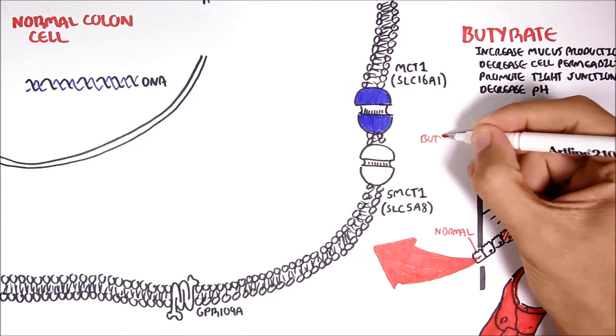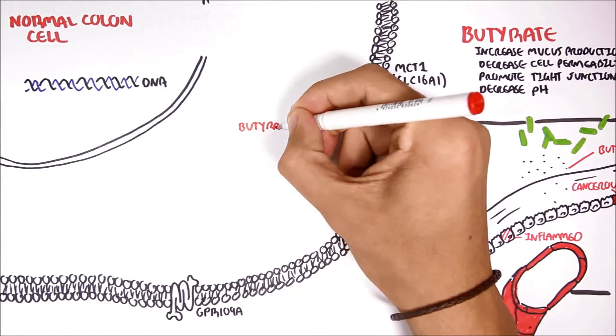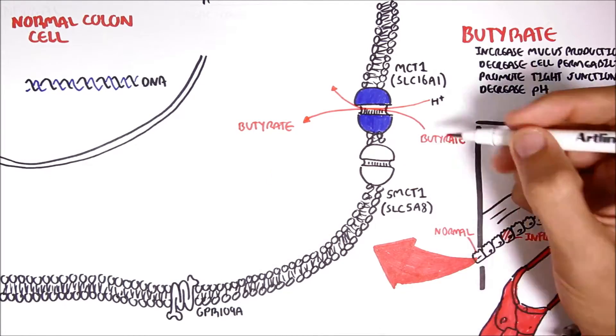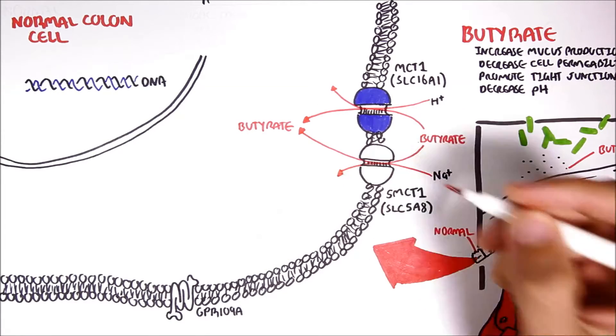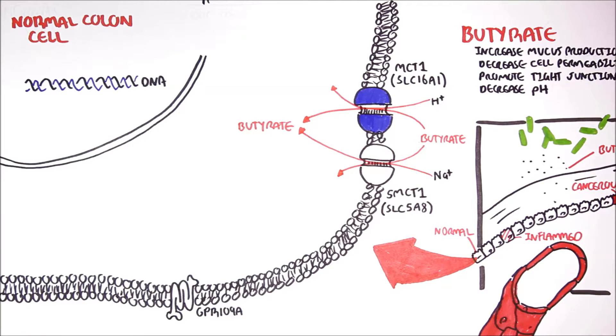MCT1 works as a co-transporter for hydrogen and butyrate. SMCT1 functions as a co-transporter for sodium and butyrate. Now, if there was a lot of butyrate being absorbed by the colon cell, this may result in a lot of sodium being absorbed, thanks to the SMCT1 transporter. And if a lot of sodium is absorbed, water tends to follow. And because of this property, butyrate is considered as an antidiarrheal agent.